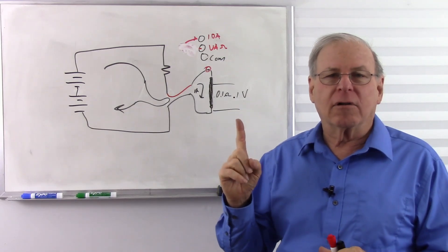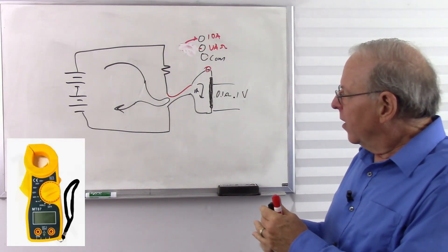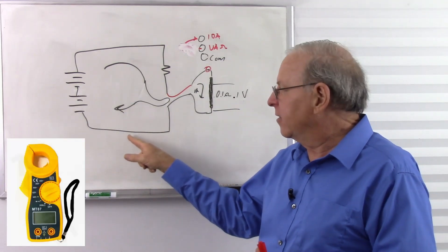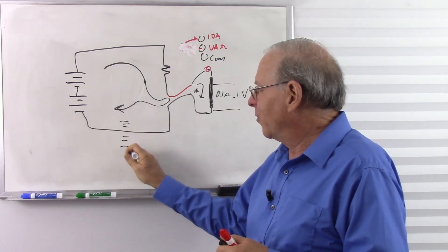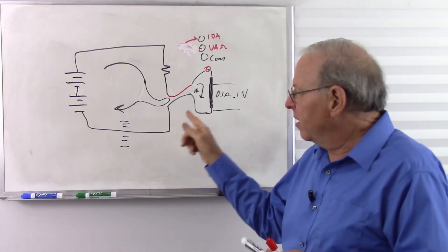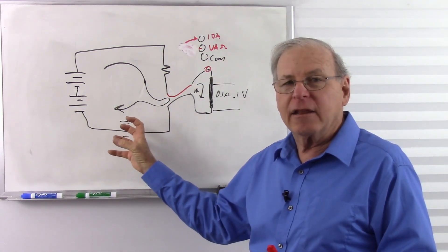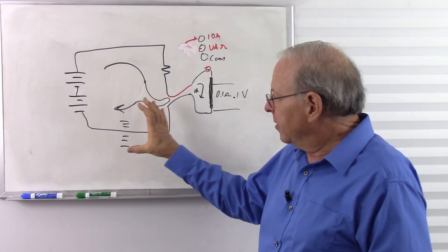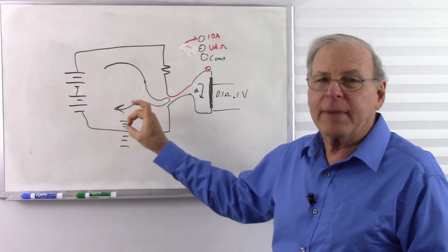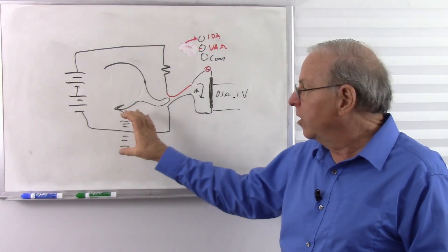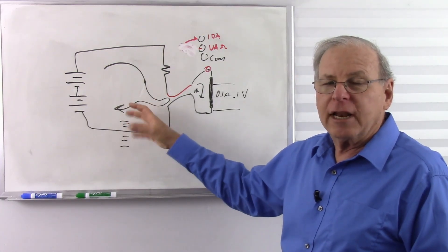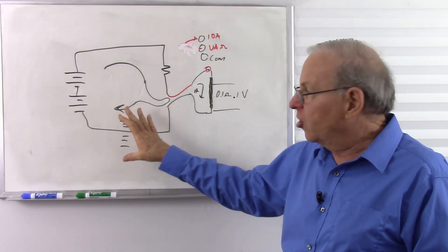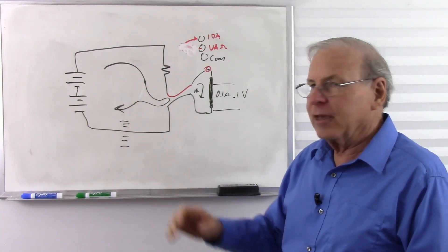Now there is another type of meter called a current clamp. And what it does is it takes advantage of the fact that we have a magnetic field, which I'm drawing by some parallel lines. Whenever you have current flowing in a wire, you get a magnetic field around it. And a current clamp clamps around the wire and measures that magnetic field. The least expensive ones only do alternating current, and so they can sense the alternating magnetic field that sets up a current inside the current meter, and they can measure that current.